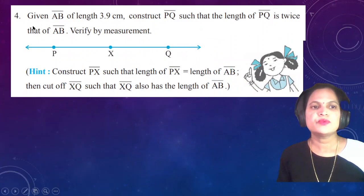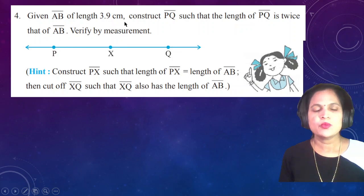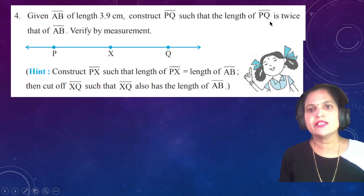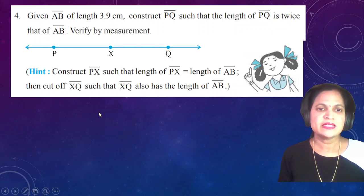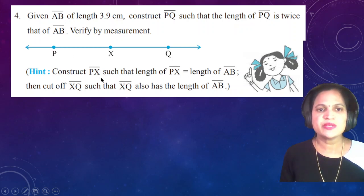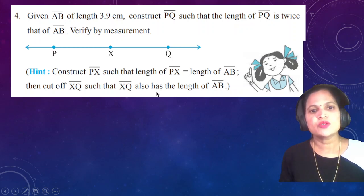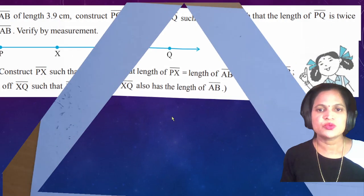Fourth question: given AB of length 3.9 cm, construct PQ such that the length of PQ is twice the length of AB. The hint given is: construct PX such that the length of PX equals the length of AB, then cut off XQ such that XQ also has the length of AB. Let's do this.